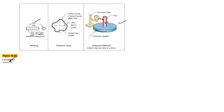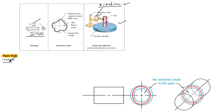The inspection method places the cylinder on a spindle that rotates, and a dial gauge is placed at one point on the cylinder. The deflection of the dial gauge must not exceed 0.002 inches. In another example, the actual circular profile must lie between two concentric circles that are 0.002 to 0.003 inches apart — that is the tolerance zone for circularity.